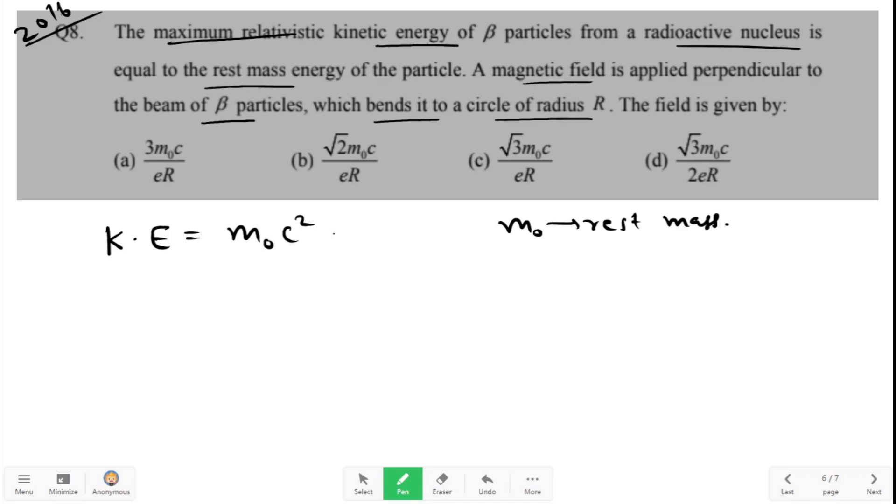When a charged particle of charge e and velocity v enters into a magnetic field which is perpendicular, then it experiences a Lorentz force. Lorentz force is equal to q into v cross B. Now when v and B are perpendicular, this is simply qvB, sine 90 degree is one. We are only interested in magnitude.